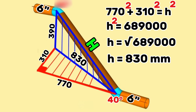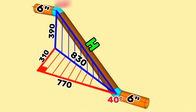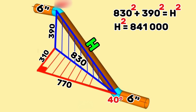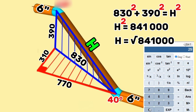Now let's find big letter H, which is the hypotenuse of the vertical blue right angle triangle. We will use the Pythagorean theorem formula again. According to the Pythagorean theorem: 830 squared plus 390 squared equals big H squared. Continuing to calculate, big H squared equals 841,000. Therefore, big H equals the square root of 841,000. Using a scientific calculator, big H equals 917 millimeters.